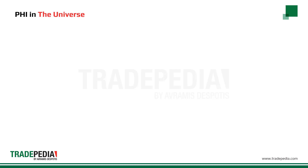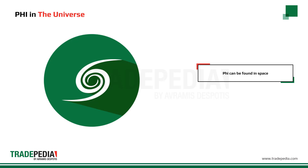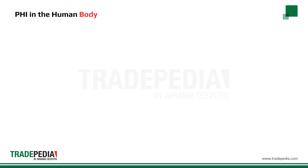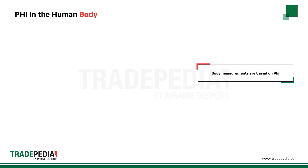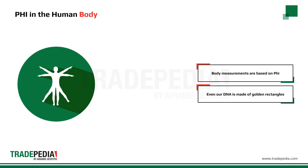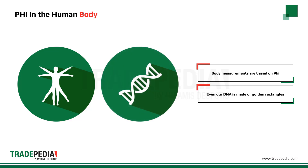Where else do we find phi? Phi can be found in space — the galaxy follows the shape of a golden spiral. The human bodies considered perfect by other people are symmetrical based on phi. That means if you measure the distance from the floor to the belly button and it is 1 meter, then from the belly button to the top of the head is 0.618 meters — this is the perfect body. Furthermore, our DNA is made up of golden rectangles. It is 21 by 34 angstroms.